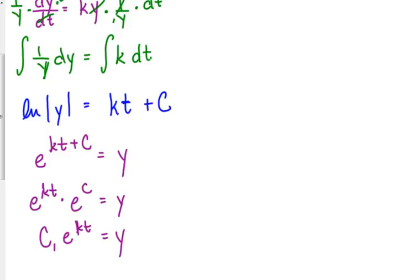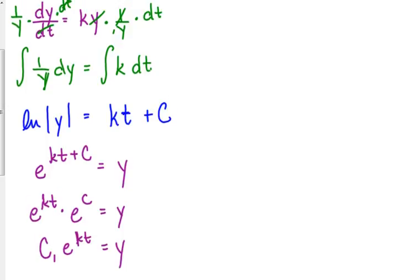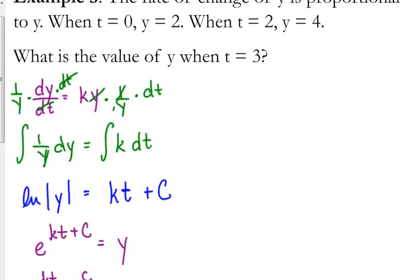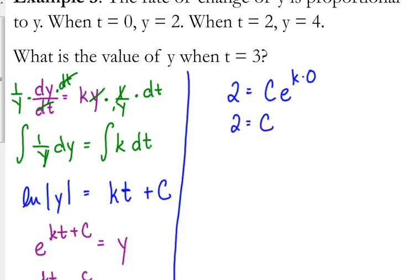Well, we don't want the general equation. We've got some specifics. So let's plug in our specifics. When t equals 0, y equals 2. So 2 is equal to c times e to the k times 0. So that says 2 is equal to e to the 0 is 1, so 2 is equal to our c.